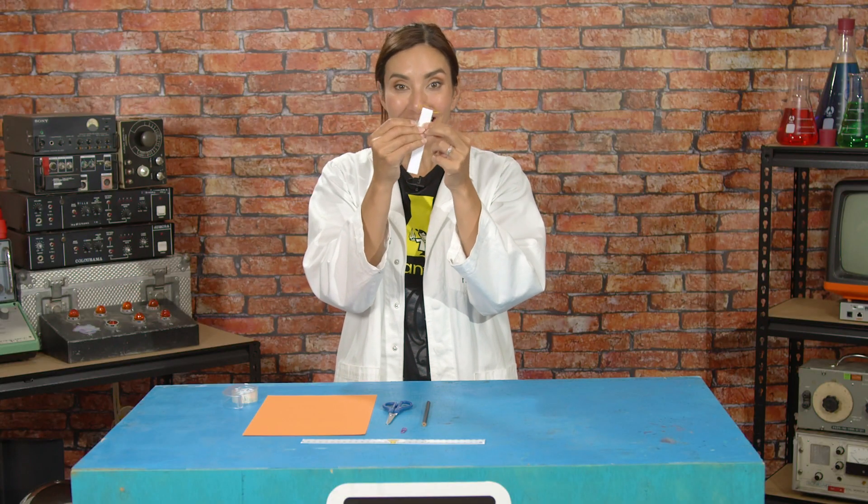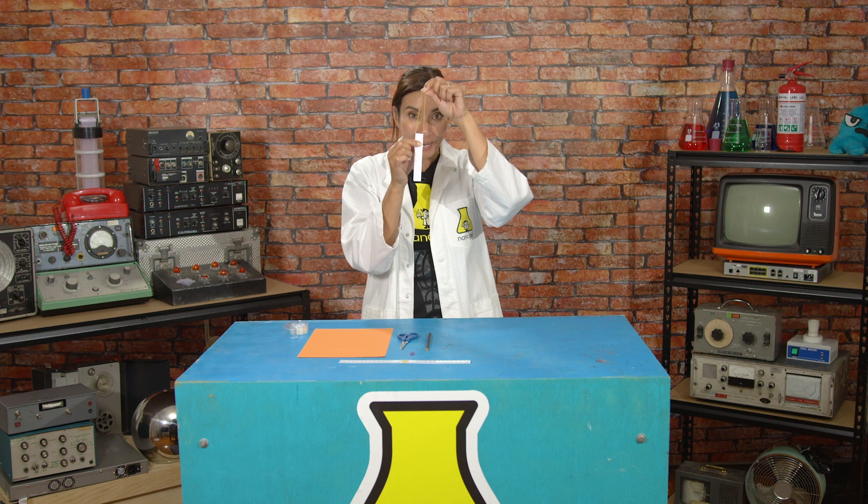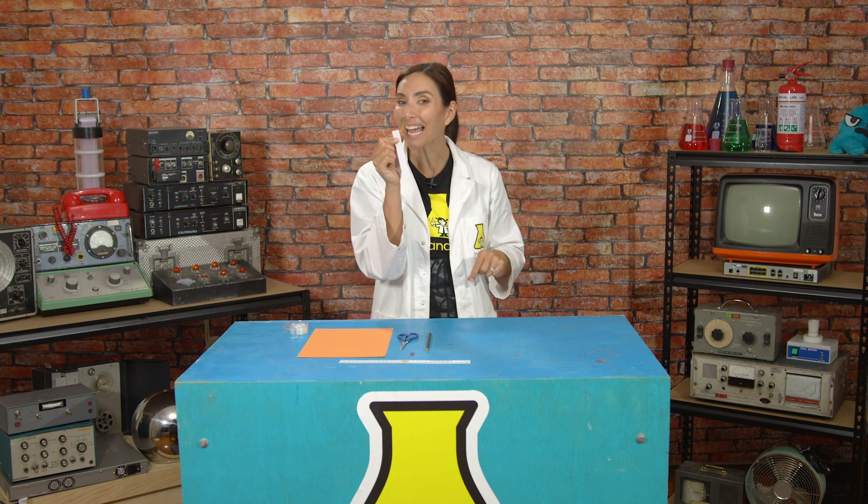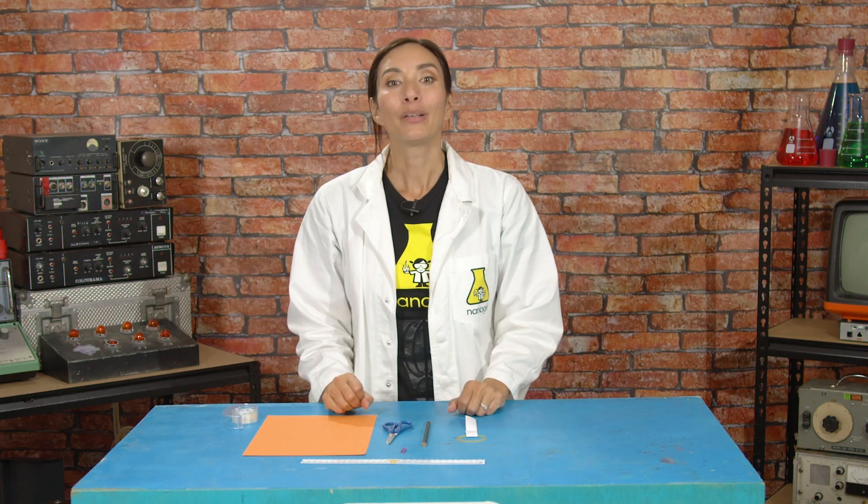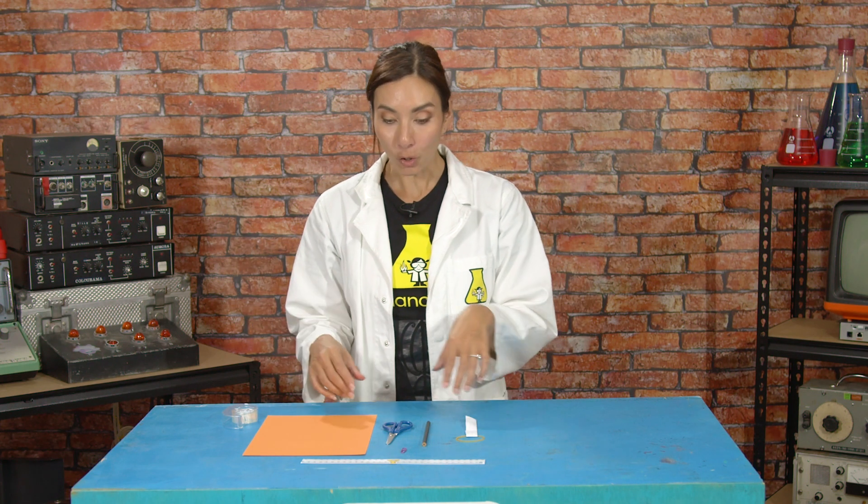This is gonna be our launch mechanism, and basically we're making a catapult. Next we've got to make the plane shape, so put the catapult to one side for now and take your piece of card.